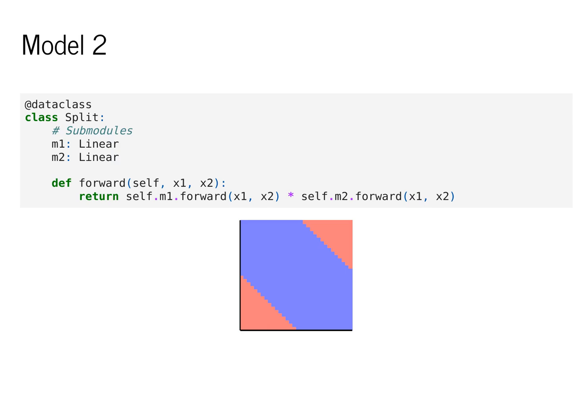Next, let's look at a slightly more complex example. This model, which we'll call split, is defined as having two submodules, M1 and M2. Both of these are instances of linear, which means they both have three parameters on their own. Together, this split model has six different parameters that it can use to make its decision.